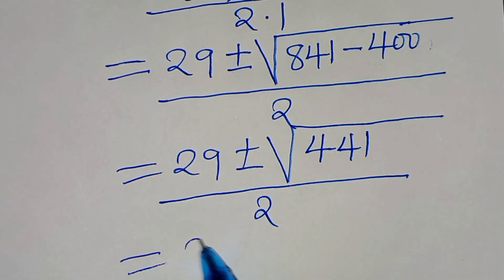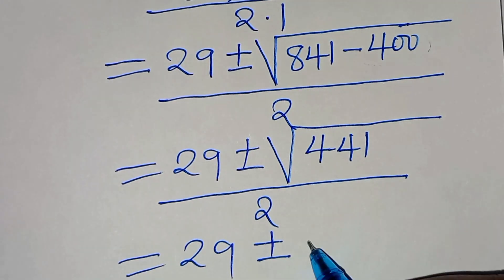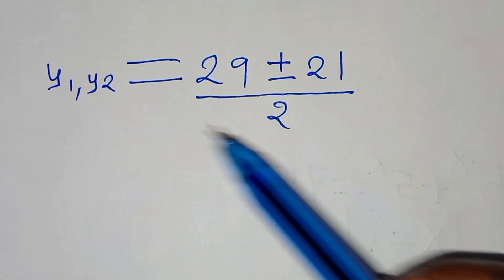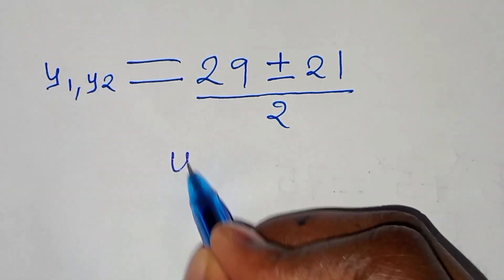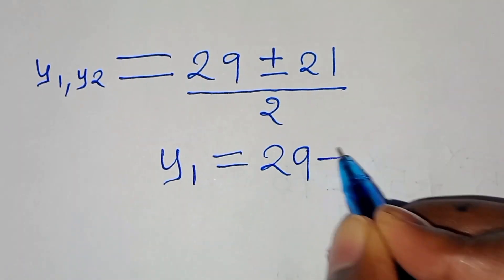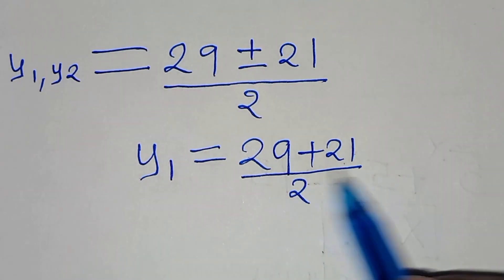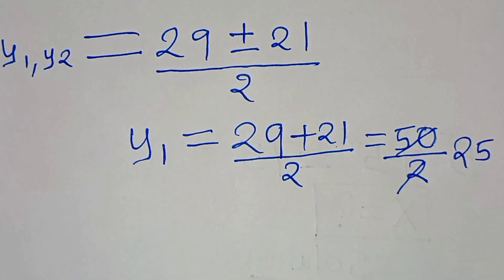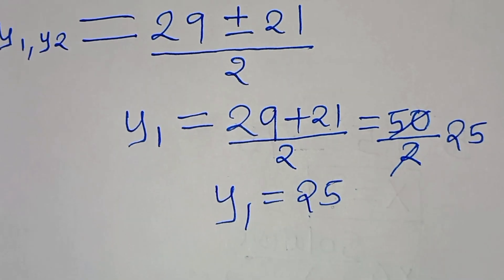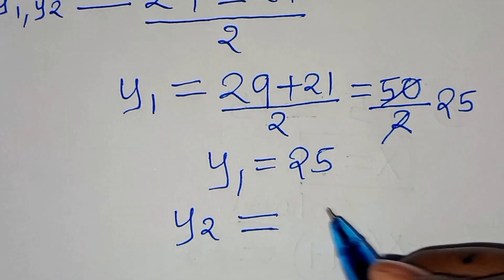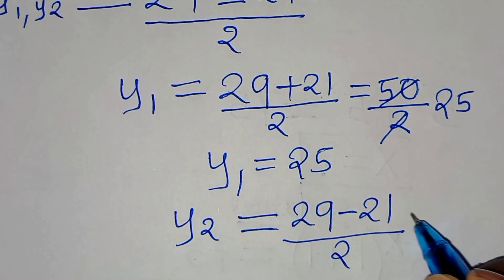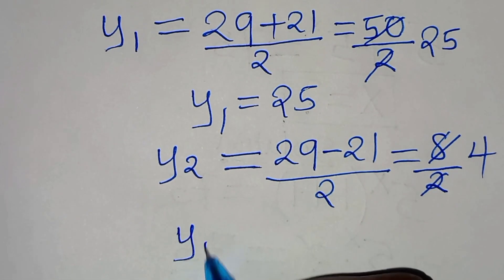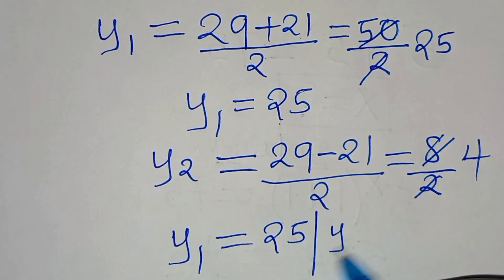The square root of 441 is 21, so we have 29 plus or minus 21, over 2. This means y1 equals (29 plus 21) divided by 2 equals 50 divided by 2, which equals 25. And y2 equals (29 minus 21) divided by 2 equals 8 divided by 2, which equals 4. So y1 equals 25 and y2 equals 4.